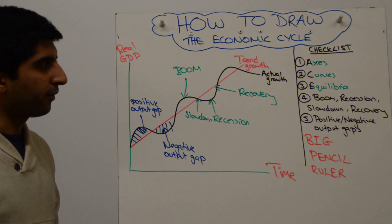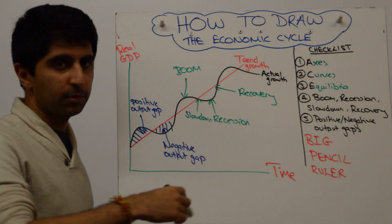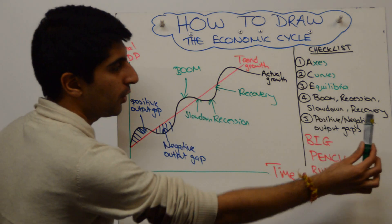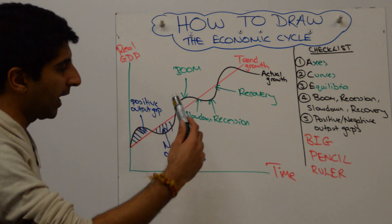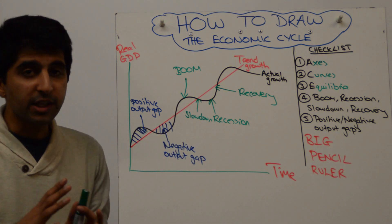Have we shown our four stages? Boom, recession, recovery and slowdown? Yes we have and labeled very beautifully. Have we shown and labeled our positive and negative output caps? Clearly. Yes we have. Very clearly. In which case, we are done.